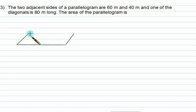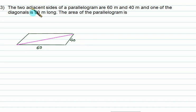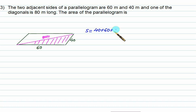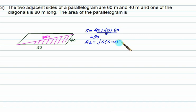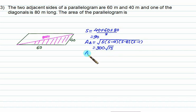Problem: Two adjacent sides of a parallelogram are 60 and 40; one diagonal is 80. Find the area. The diagonal divides the parallelogram into two triangles. For one triangle with sides 40, 60, and 80: s = (40 + 60 + 80) / 2 = 90. Area = √(90 × 30 × 50 × 10) = 300√15. Total parallelogram area = 2 × 300√15 = 600√15.